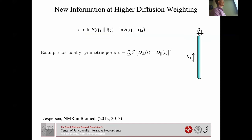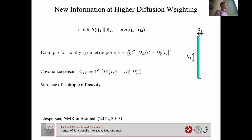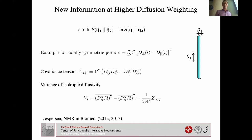For axons with parallel and perpendicular diffusivities, the eccentricity becomes the squared difference of the two diffusivities. The C tensor also gives the variance of isotropic diffusivity: take the trace within each pore and look at the variance across all pores in the voxel. This generalizes q-space trajectory imaging, which assumes no time dependence, to a fully time-dependent framework.